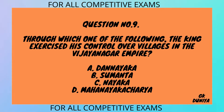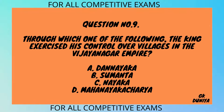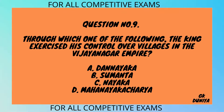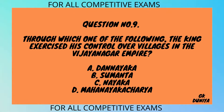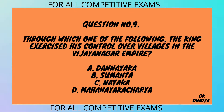Question No. 9. Through which one of the following did the king exercise his control over villages in the Vijayanagara Empire? A. The Nayaka, B. Sumanta, C. Nayaka, D. Mahanaikacharya.